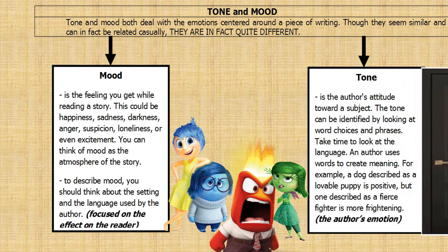When we say tone, it is the author's attitude toward a subject. The tone can be identified by looking at word choices and phrases. Take time to look at the language an author uses to create meaning. For example, a dog described as a 'lovable puppy' is positive, but once a character is described as a 'fierce spider,' it is frightening. Tone is focused on the author's emotion.